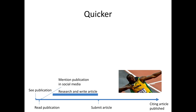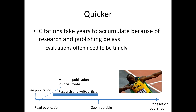A second major advantage of altmetrics is that they're much quicker to accumulate than journal citations. Citations take years to accumulate because of research and publishing delays. Between the first idea for a research project and the citations appearing for the published output, the gap might easily be four or five years.